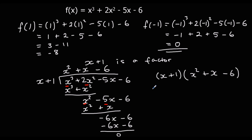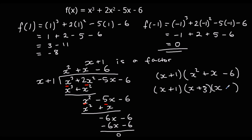It's not yet fully factorised because we can factor the quadratic bracket further. We need two numbers that multiply to make minus 6 and add to make positive 1 — that's plus 3 and minus 2. So f(x) is fully factorised as x plus 1, times x plus 3, times x minus 2.